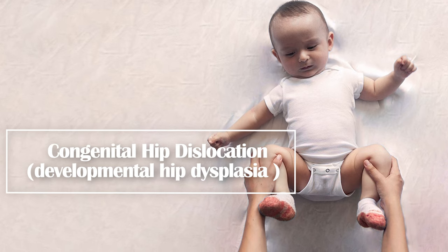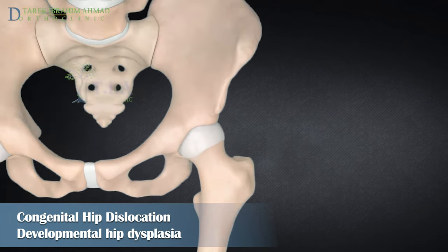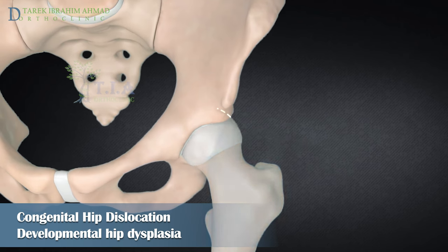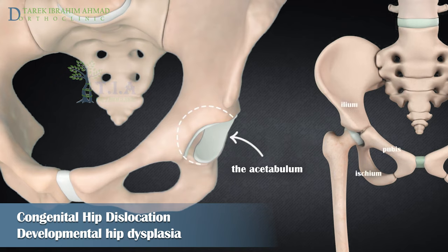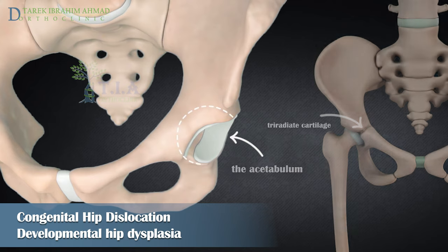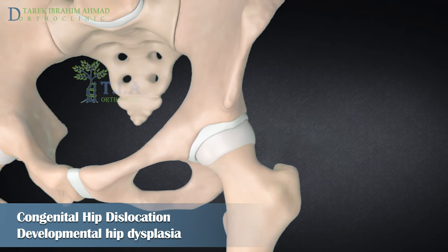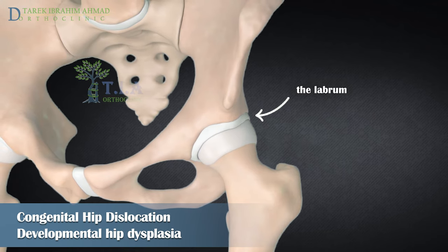Congenital hip dislocation, or developmental dysplasia of the hip. A kid's hip is a ball and socket joint consisting of the acetabulum and the femoral head. The surface anatomy of the acetabulum is characterized by its three major components: ilium, ischium, and pubis. At skeletal maturity, these three bones fuse into one at the central triradiate cartilage.